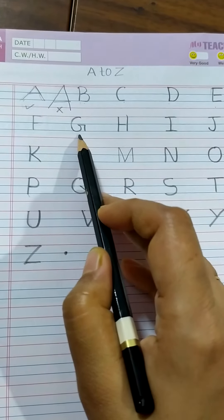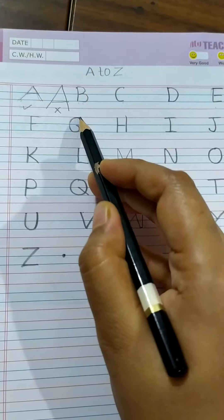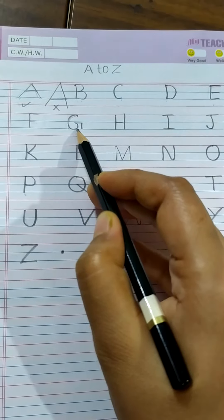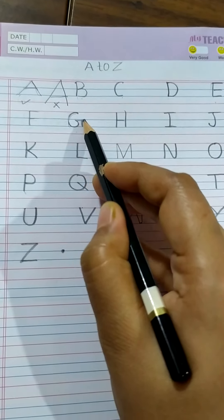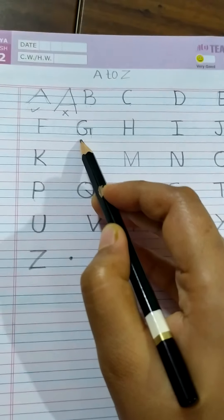How you should write letter G, children? Make here letter C. When you will make here one curve, go little up. Put here sleeping line and standing line. This is letter G.